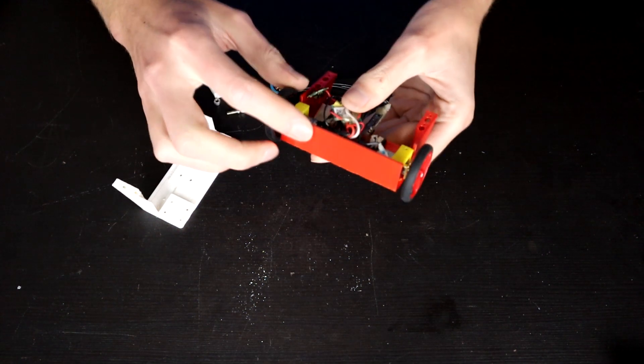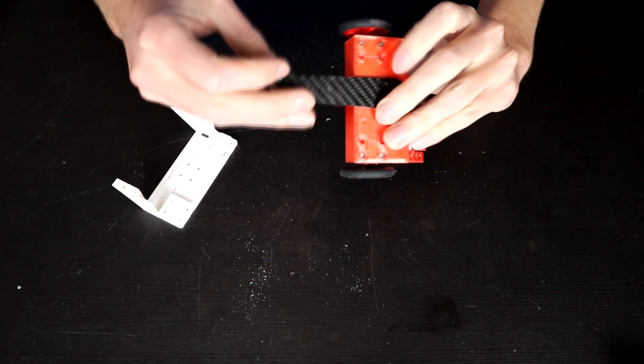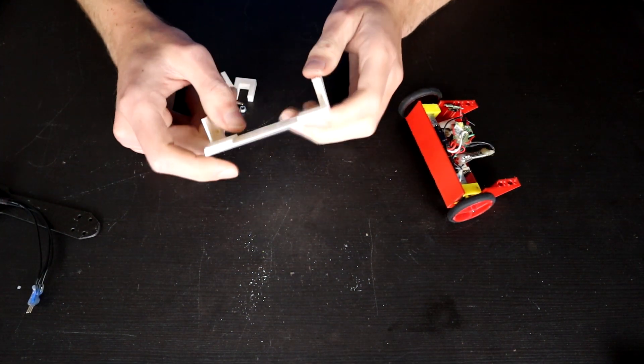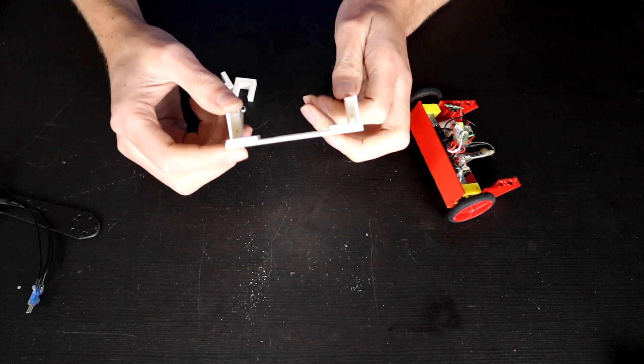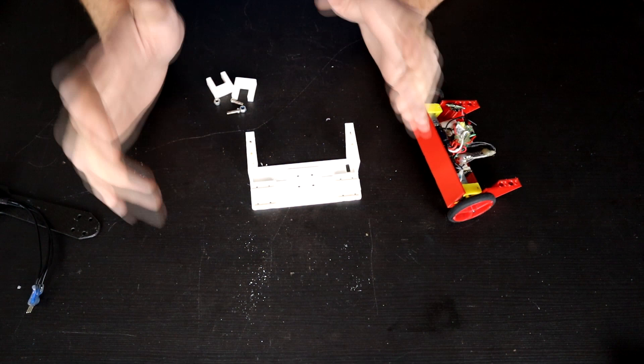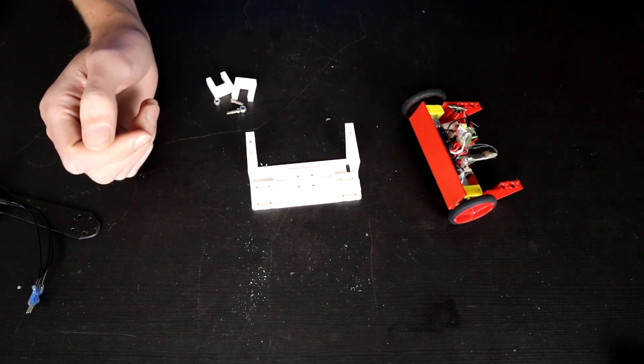Now, the eagle-eyed amongst all of you may have spotted that there is a lot of empty space in here. In the test print there was actually a back wall which is the separator between the weapon and the electronics, and that doesn't exist in this new chassis. Not only did I think that was going to be really hard to print in ABS, I wanted to fill it with my favorite material for combat robots right now, which is HDPE.